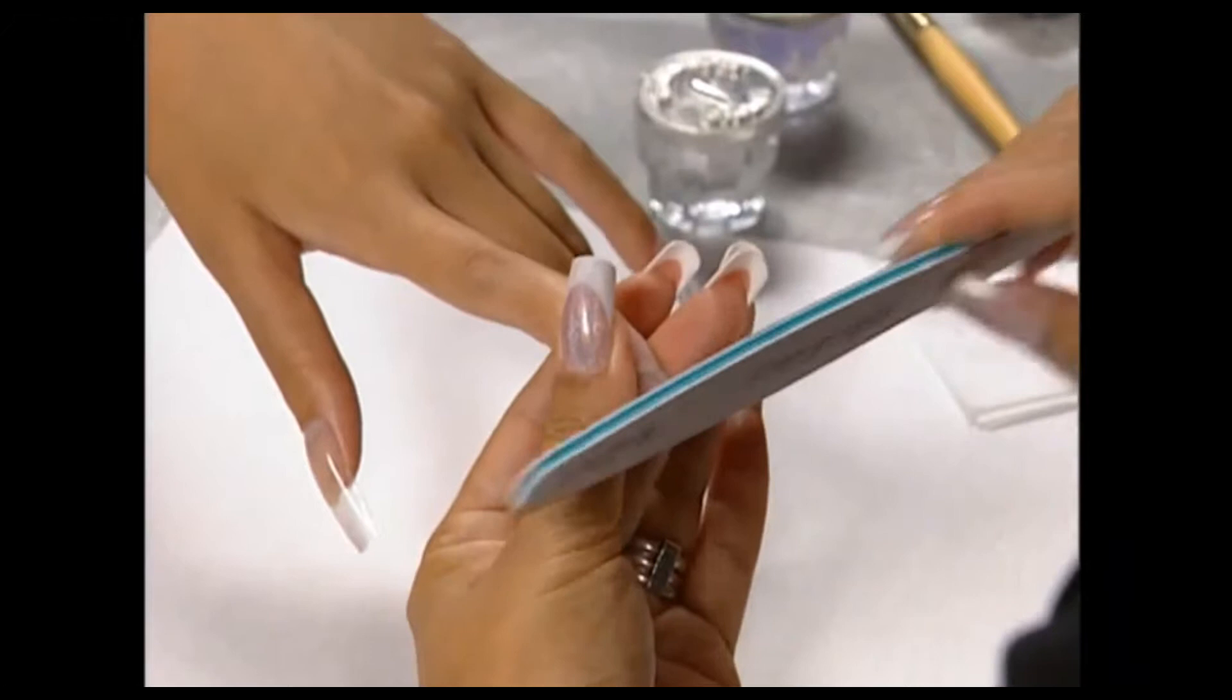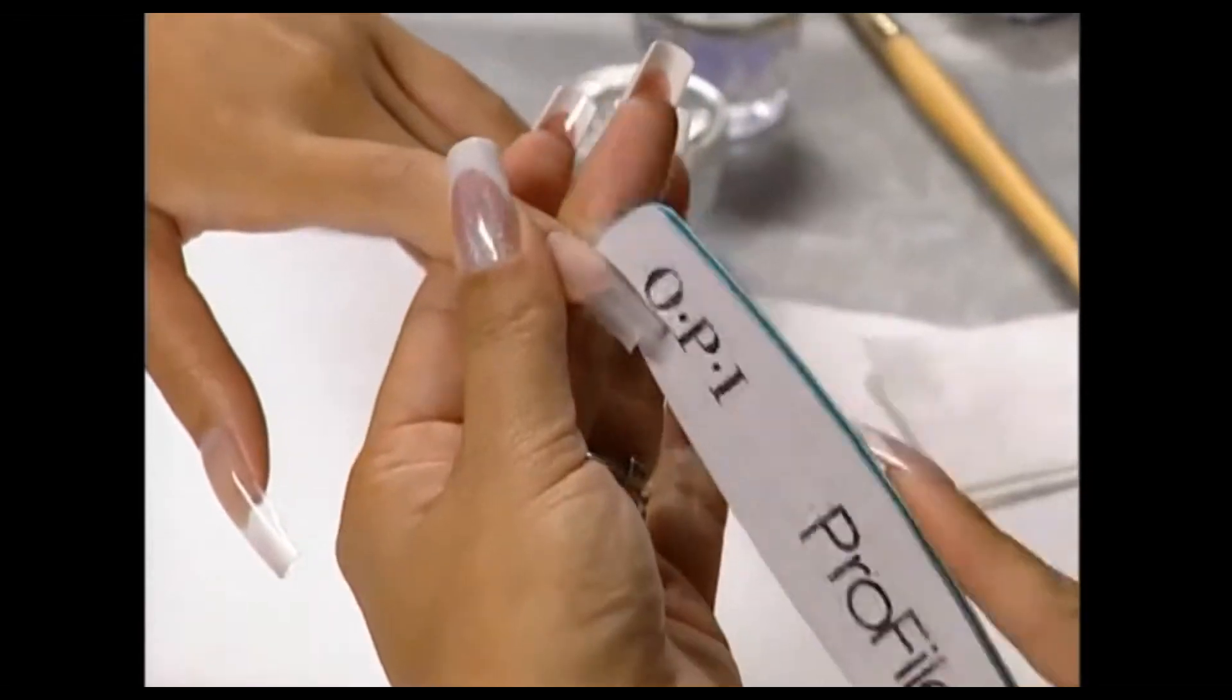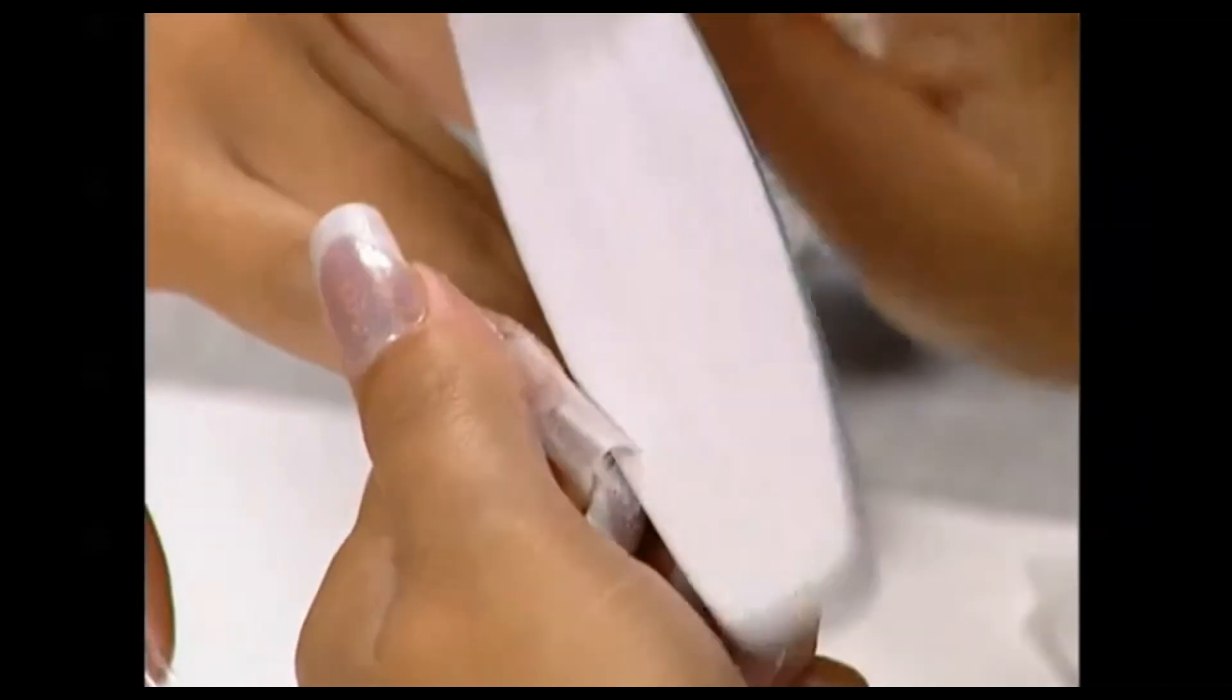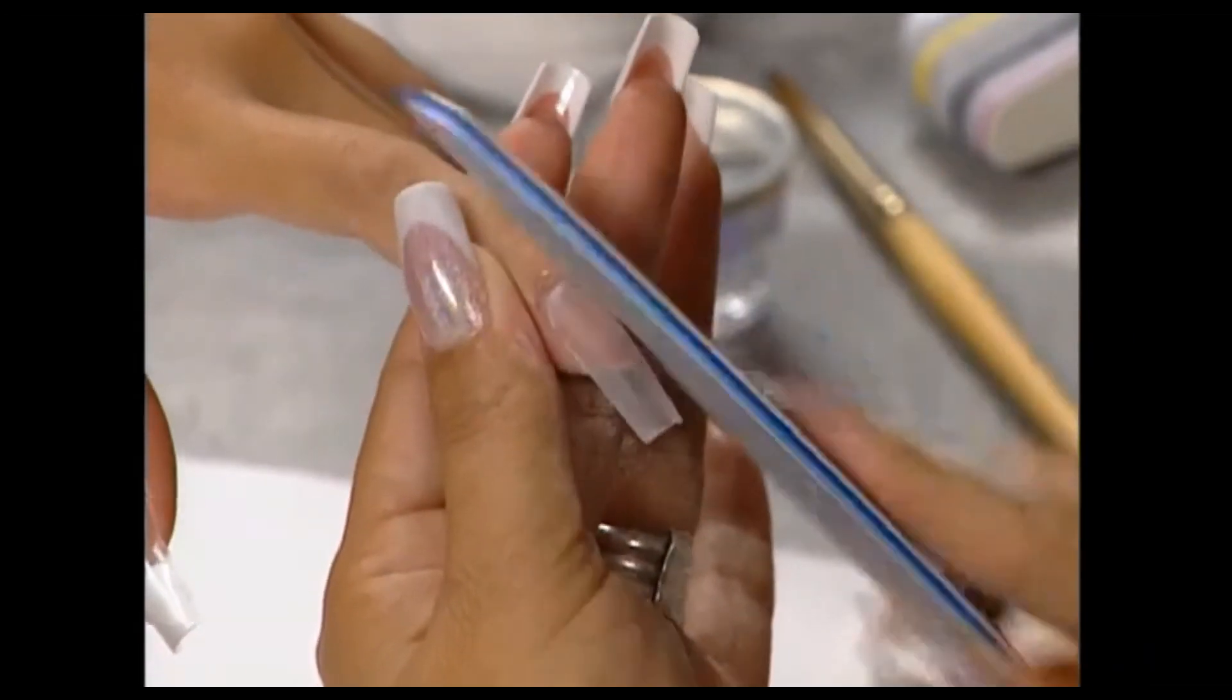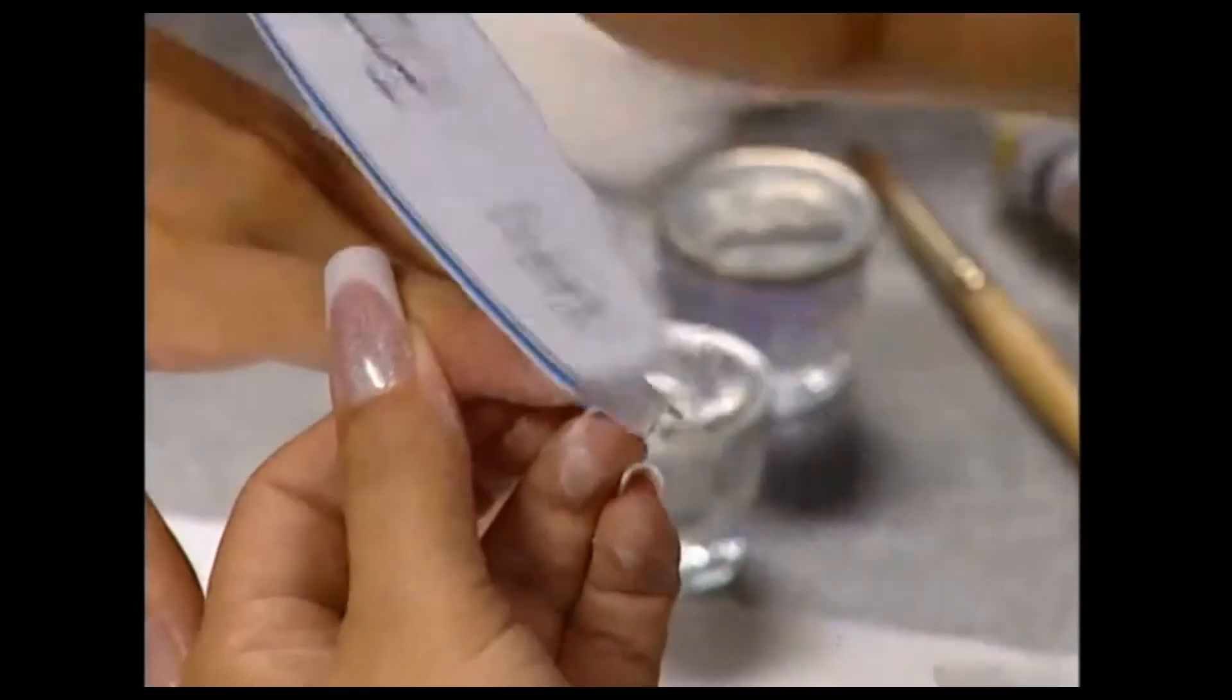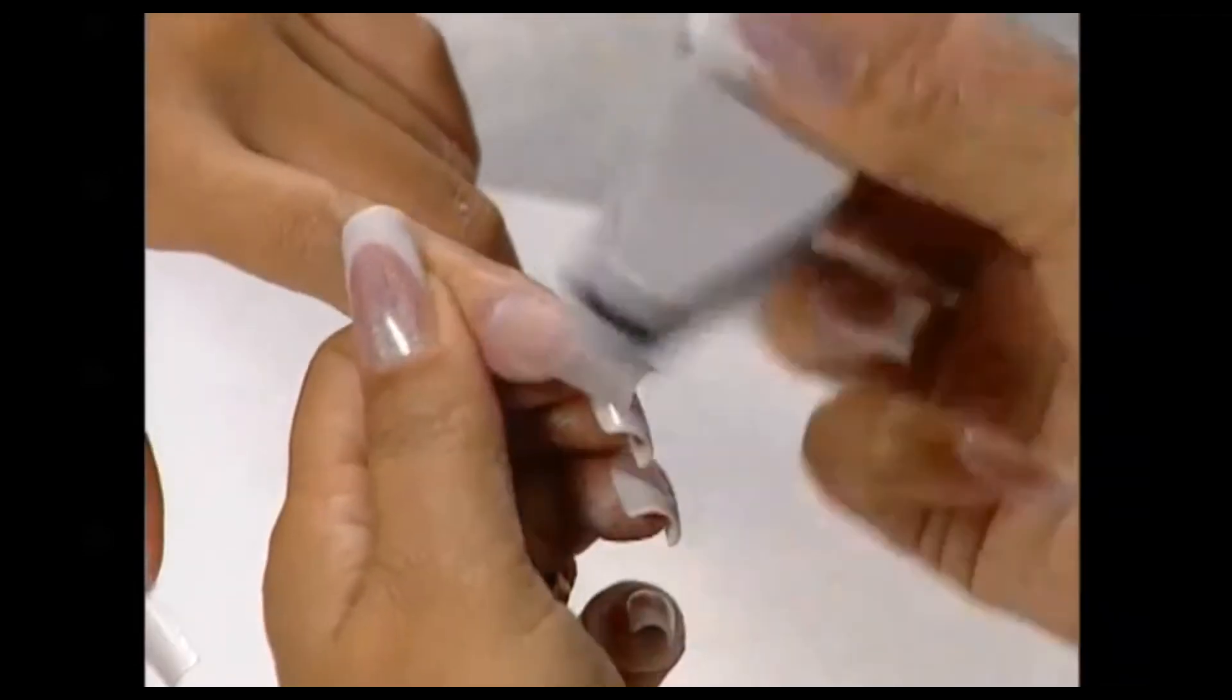File the free edges and sidewalls with the Profiles Edge Silver 150 file, then file the underside. Bevel around the cuticles and sides with the Edge Silver 180 cushioned board file, then file down the center to contour the acrylic on the surface. The Flex Silver 100-180 removes imperfections and finishes contouring the nail surfaces.